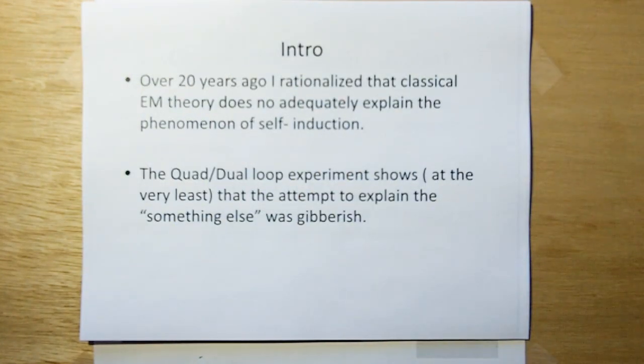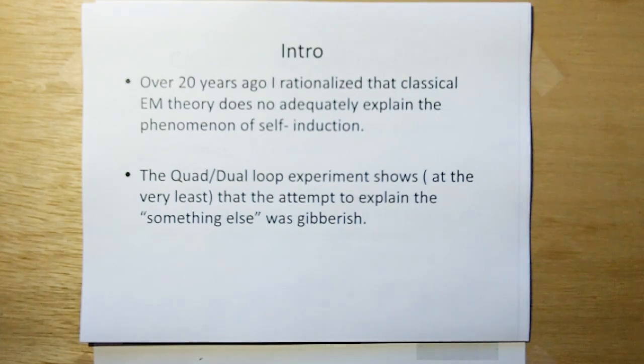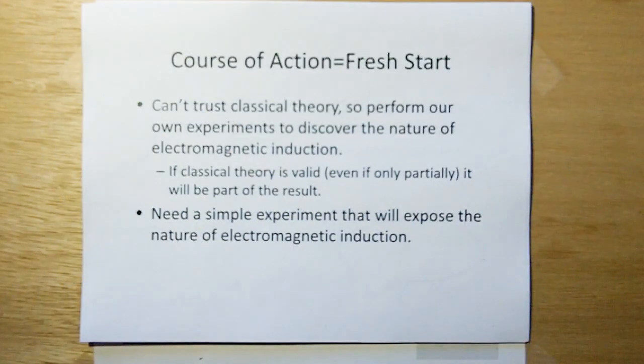Over 20 years ago, I rationalized that classical theory does not adequately explain the phenomenon of self-induction. From the quad loop, which was originally the dual-loop experiment, it shows at the very least that the attempt to explain the something else was gibberish. But it also really shows that the rest of it is gibberish.